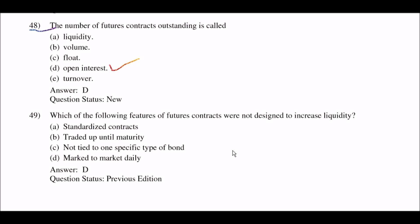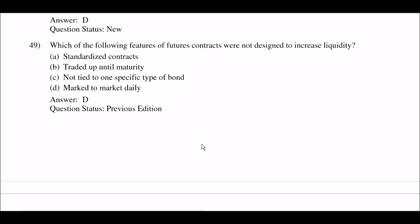Next question: which of the following features of futures contracts was NOT designed to increase liquidity? Option A: standardized contracts; option B: traded up until maturity; option C: not tied to one specific type of bond; option D: marked to market daily. The right answer is option D: marked to market daily.